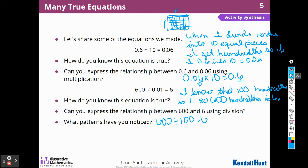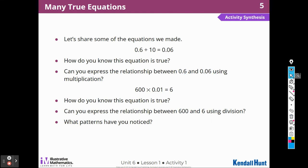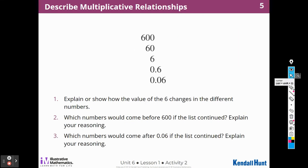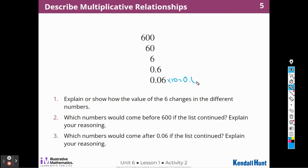We're going to continue to work with the numbers from this activity. The first thing it says is to explain or show the value of 6 — how the value of 6 changes in the different numbers. The value of 6 in each number is one-tenth of the number above it. So this is one-tenth of that, and 60 is one-tenth of that. If I multiply this times 10, I get the number above it — that's true going up the list.